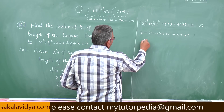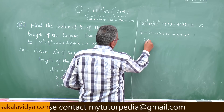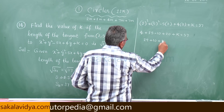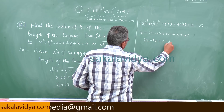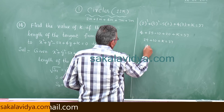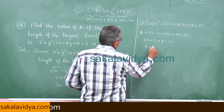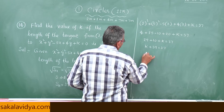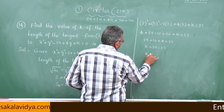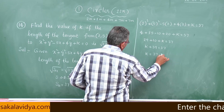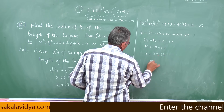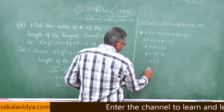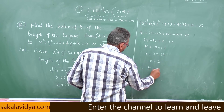This simplifies to 29 + 10 + K = 37, so K + 39 = 37, giving K = 37 - 39, that is K = -2.